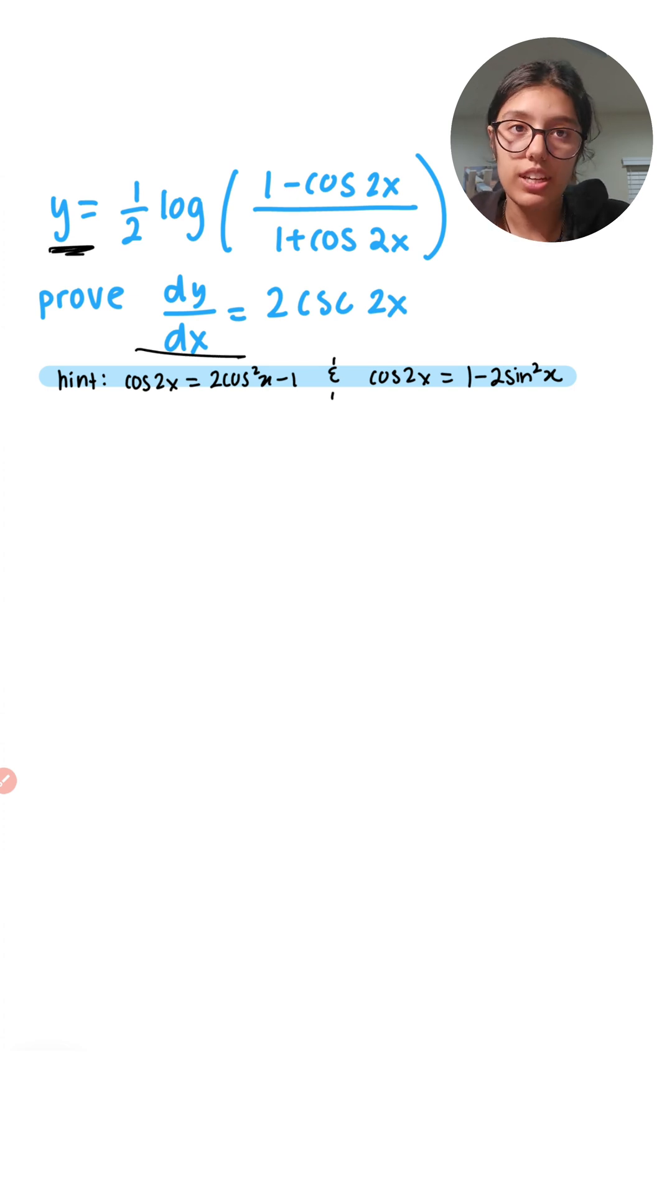That is exactly what these hints are helpful for. They're not helpful in finding the derivative, but instead they're helpful in simplifying this equation. Let's see how that is. We know that we have 1 minus cos 2x. Let's take a look at this hint over here. We know that 2 sine squared x is equal to 1 minus cos 2x, just rearranging it. That is the numerator. For the denominator, 1 plus cos 2x, 2 cosine squared x is equal to 1 plus cos 2x.